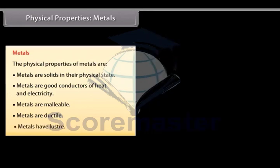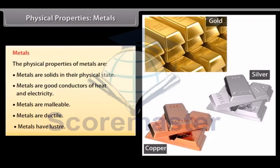Lustre. Metals reflect light from their shiny surface. They can also be polished. For example, Gold, Silver and Copper are metals with a shiny surface and can be polished.